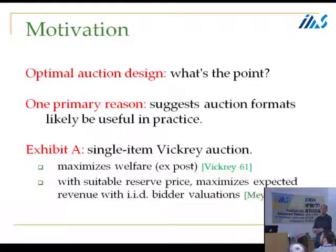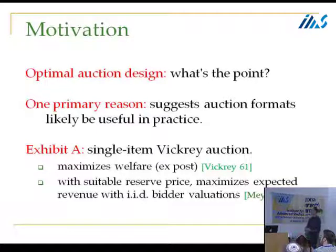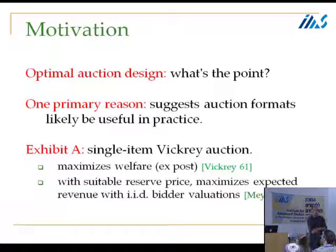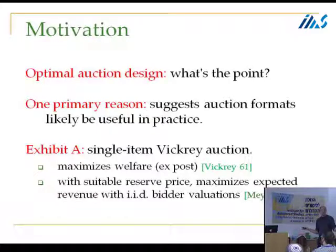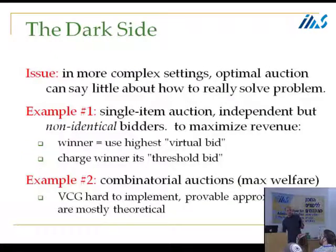An exhibit of this kind of philosophy would be the lovely but lonely Vickrey auction — just a single item, second price auction. If you wanted to maximize welfare ex post, just use the Vickrey auction: no matter what the valuation profile is, it's given to the highest bidder, dominant strategy incentive compatible. If you want to maximize revenue — expected revenue — with a common prior and IID bidders, again just use the Vickrey auction, supplemented with a reserve price which depends on the distribution.